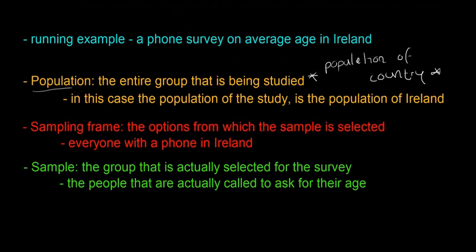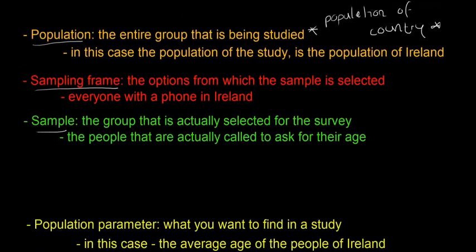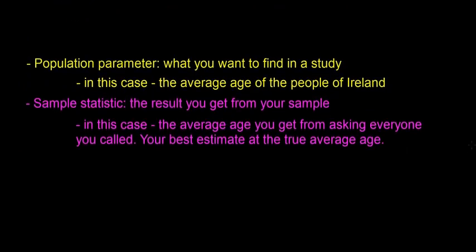Those are the differences between population, sampling frame, and sample. The last thing to cover is two more words you'll see come up a lot. A population parameter is what you want to find out in a study — in this case, the average age of people in Ireland. It's the true value, and sometimes you never know the true value and just have to estimate it. The sample statistic is the result you get from your sample survey — the average age you get from everyone you called.